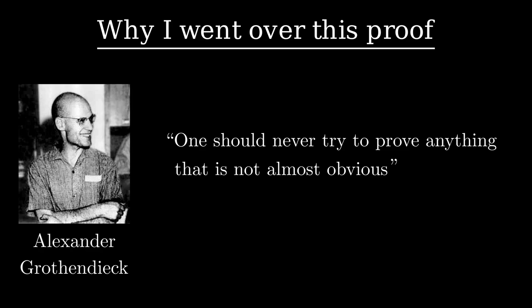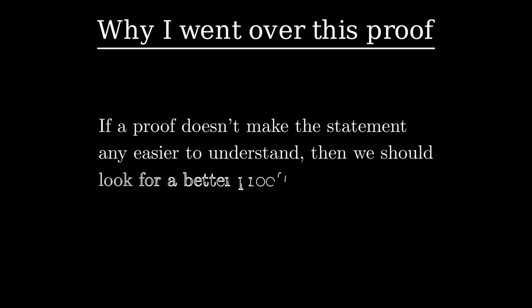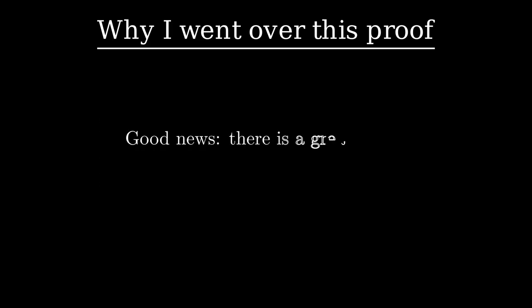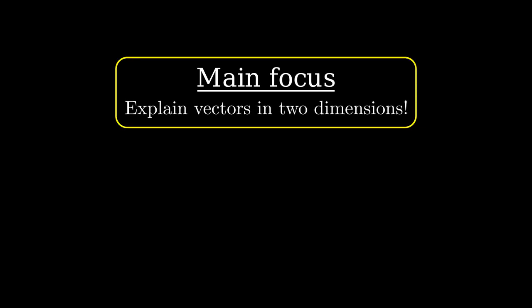So, if we interpret the quote with this in mind, a new idea slowly creeps forward. If a proof doesn't make the statement any easier to understand, then we should look for a better proof. And there is, in fact, a proof of these trig identities that actually makes them almost trivially true in some sense, completely in line with Grothendieck's remark. But there is a major catch, which explains why it's not used in textbooks very often. The proof uses these things called vectors. Although the final goal is to give a beautiful proof of the addition formulas for sine and cosine, the main focus of this video is going to be explaining vectors in two dimensions. If you already feel comfortable working with these vectors and just want to see the superior way to prove the trig identities, then feel free to skip ahead to the final section of this video.